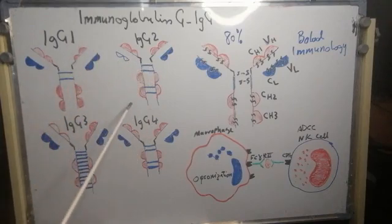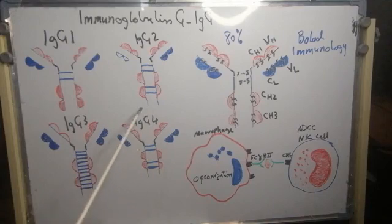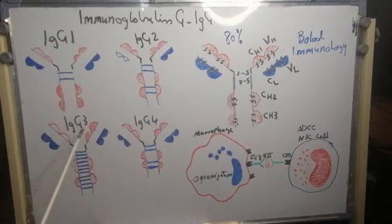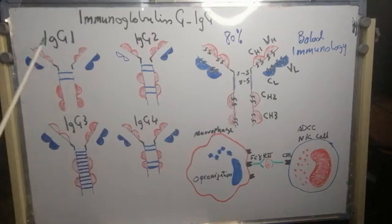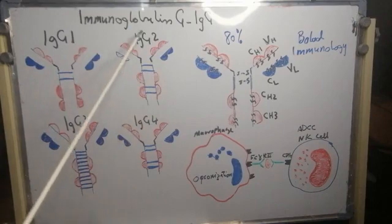With regard to complement activation, IgG4 does not activate the classical pathway of the complement at all. IgG3 is the most efficient in activating the classical pathway, followed by IgG1, and IgG2 is the least efficient in activating the classical pathway.